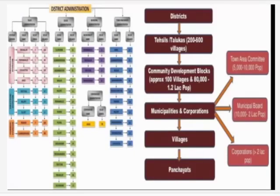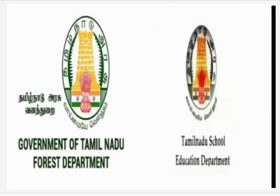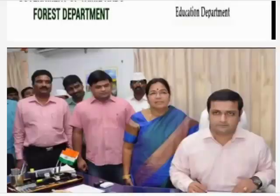Next we learn about District Administration. The District Administration system consists of different departments of the district, such as the Police Department, Medical Department, Forest Department, and Educational Department. The District Collector is the head of the district and is responsible for its proper and smooth functioning.